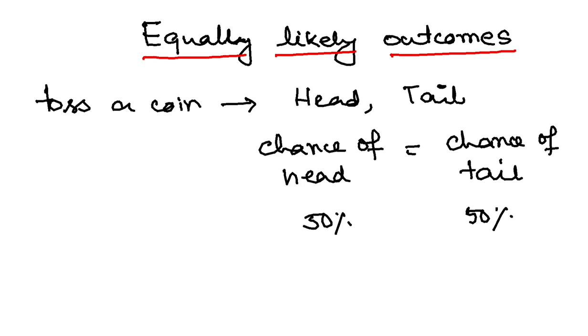This is what equally likely outcomes means: there is an equal chance of getting a head and there is an equal chance of getting a tail.